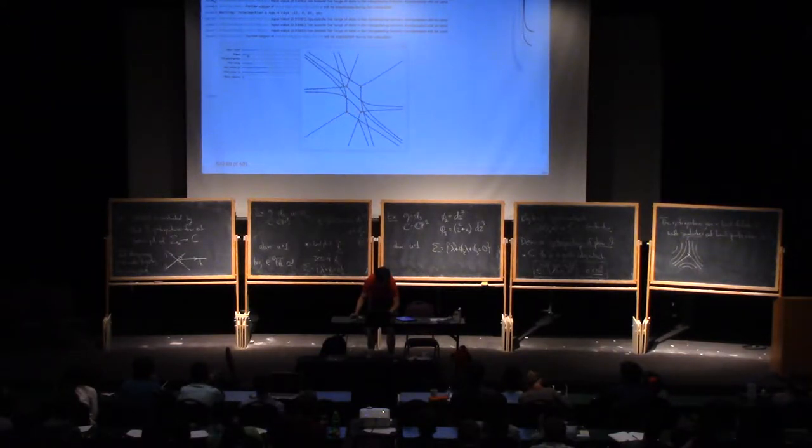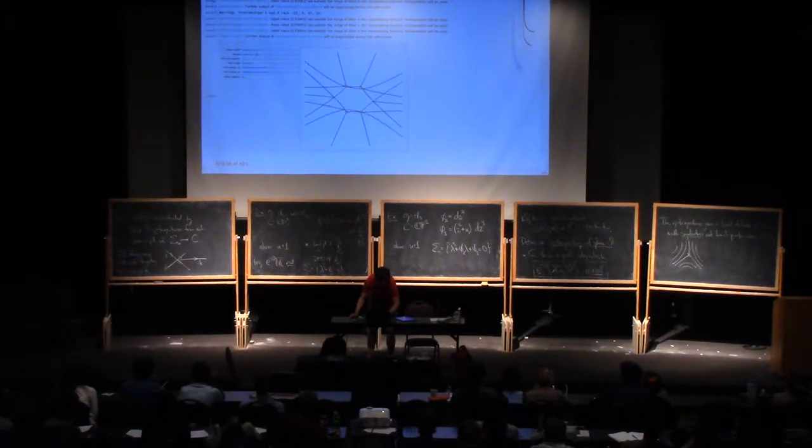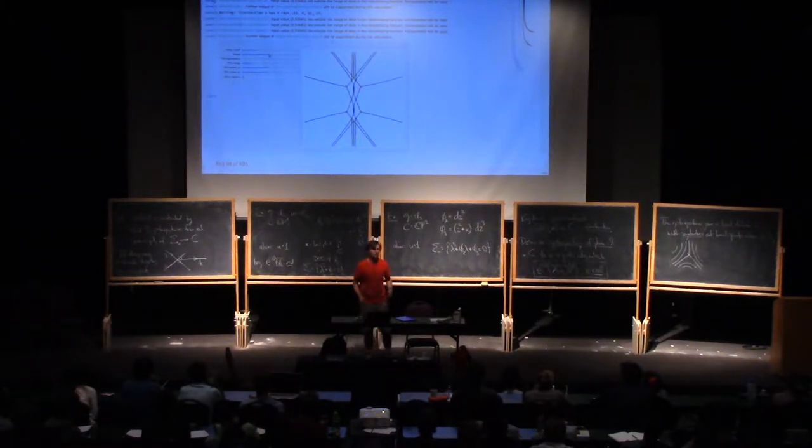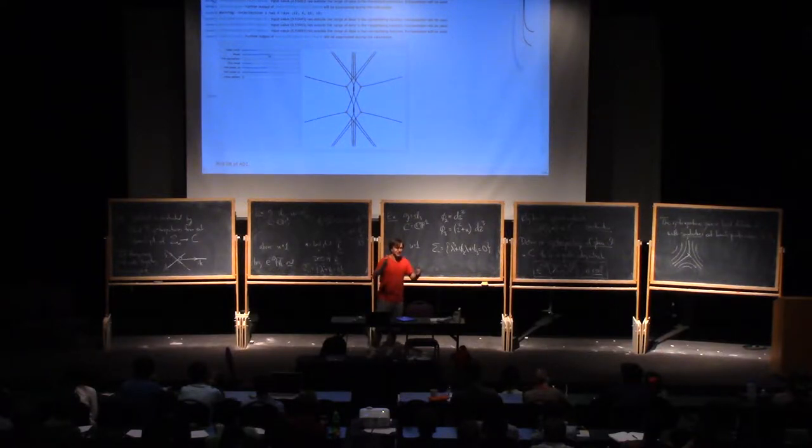Once again, we can kind of vary the phase and see how the picture changes. There's some critical moments where something happens. That's a picture in the C of CP1. Well, it's a picture in the patch of CP1 that's missing infinity.